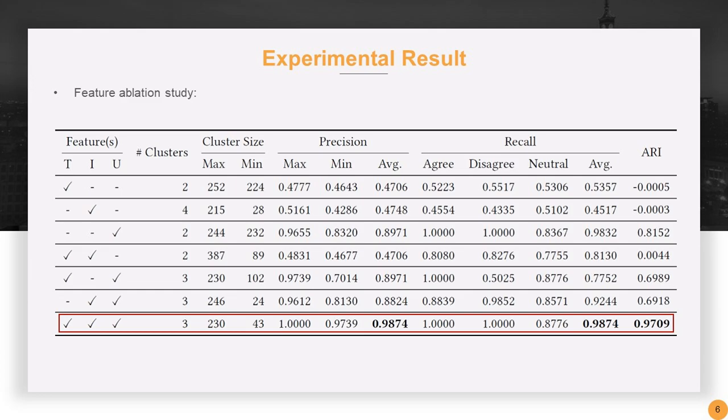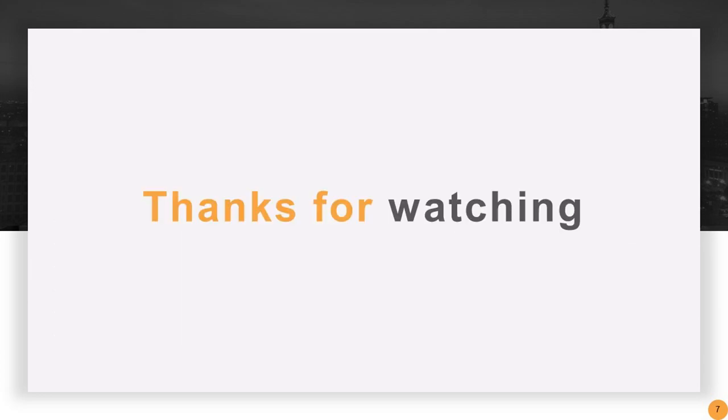Finally, in our feature ablation study, we combine and test the three types of features: text, image, and user interaction. The results show that in the framework we proposed, stance detection that integrated text, image, and user interactions delivers the best performance. Our promotional video concludes here.